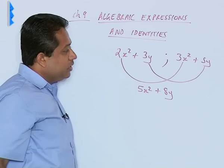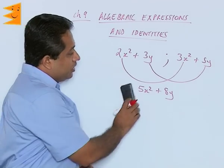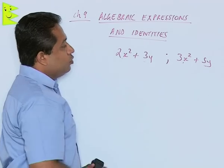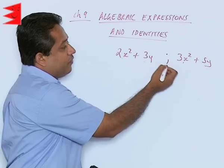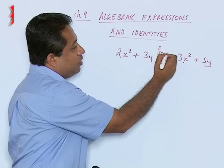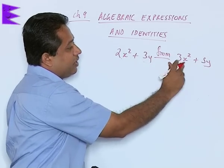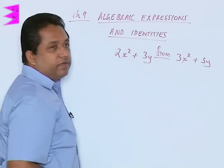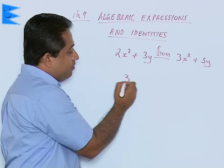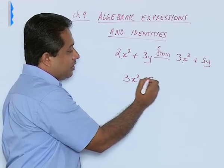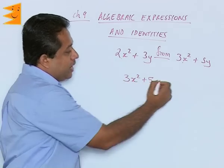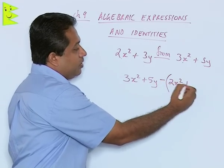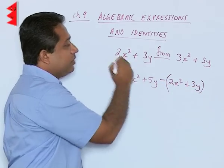Now, if we were to subtract — suppose the same question, but instead of addition, they are asking us to subtract 2x square plus 3y from 3x square plus 5y. If we were to subtract 2x square plus 3y from 3x square plus 5y, then when it says 'from this,' that will be written first. So, 3x square plus 5y minus the first term, that is 2x square, and then plus 3y, which is the second term of the first expression.